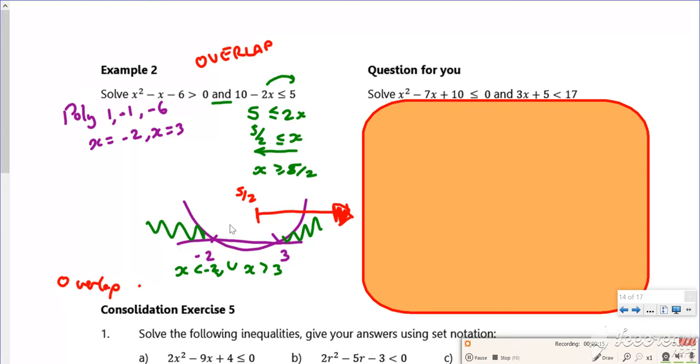Right, so the overlap is from 3 onwards. So the overlap is just X is, now it starts at 3, so X is greater than 3.